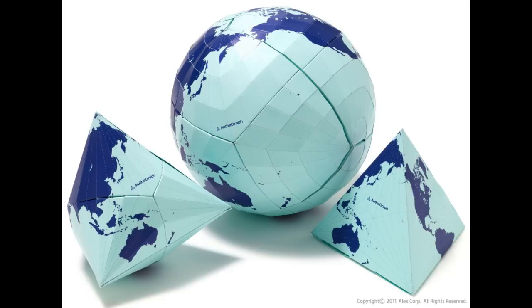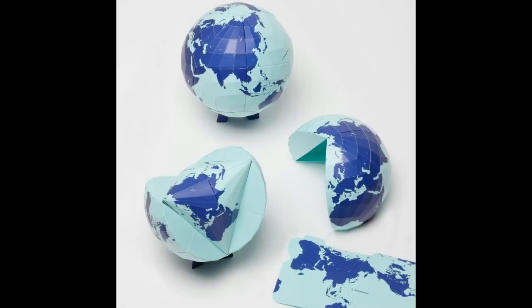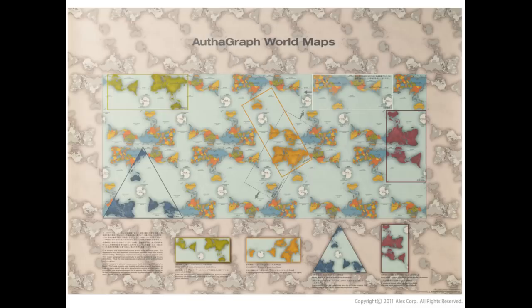Triangular world maps are also possible using the same method. The name is derived from 'authalic' and 'graph.' The method used to construct the projection ensures that the 96 regions of the sphere each have the correct area, but the projection does not fully qualify as equal-area because the method does not control area at infinitesimal scale or even within those regions.